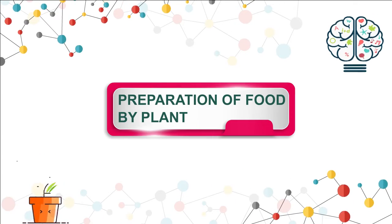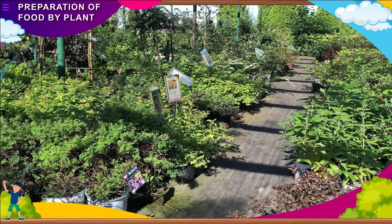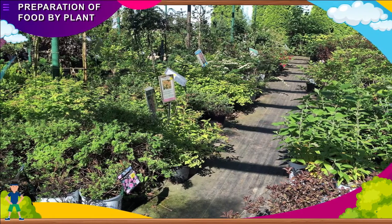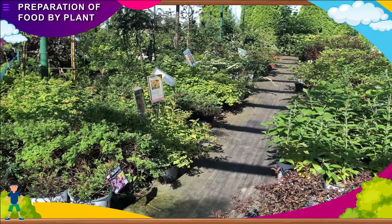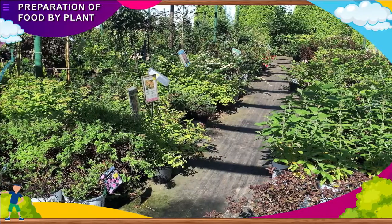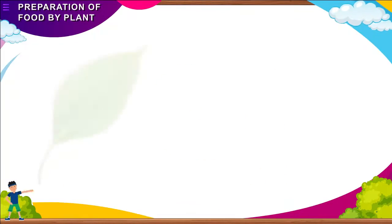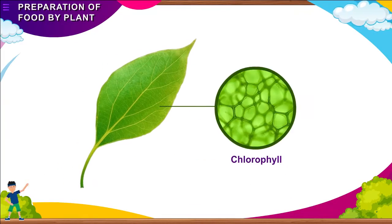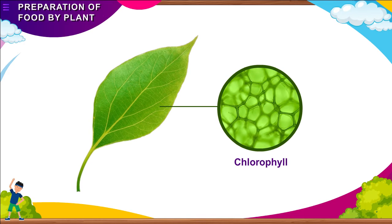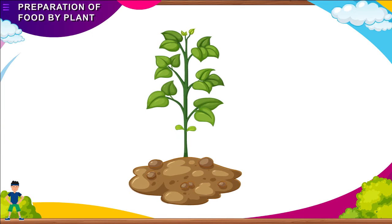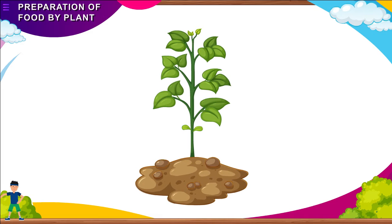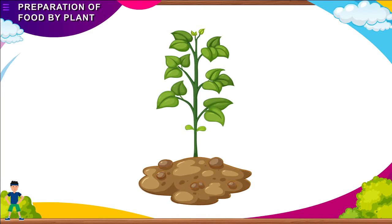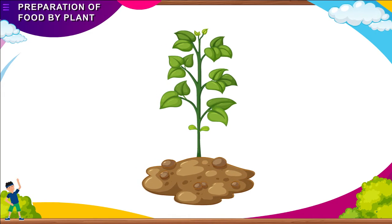We see trees, shrubs, herbs and grass around us. One thing is common in them, that they are full of green leaves. The green pigment called chlorophyll makes the leaves green. Only green leaves make food for the plants. Hence, the leaves are called the food factories or kitchens of the plant.